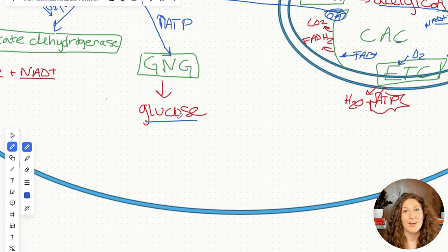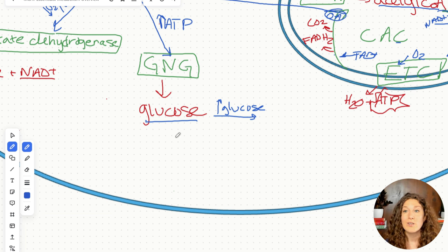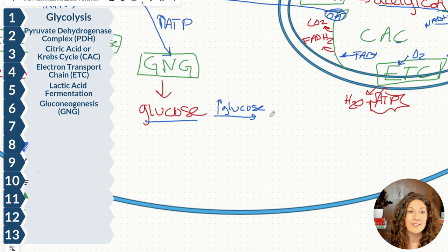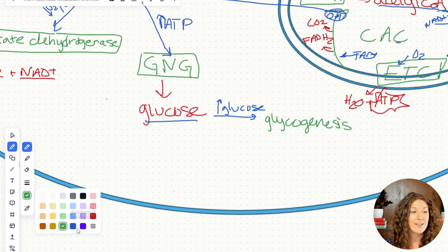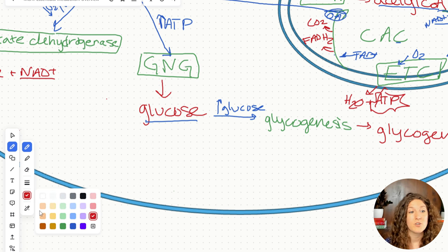But if we have high energy and high glucose levels, we may just want to store that glucose for later. The pathway that allows us to store glucose is known as glycogenesis. Genesis meaning creation — glycogen. Glycogen is our storage form of glucose; it's a polysaccharide of lots of glucose monomers. Glycogen is our storage form, and whenever we're ready, we just store it.